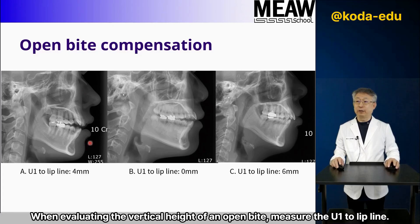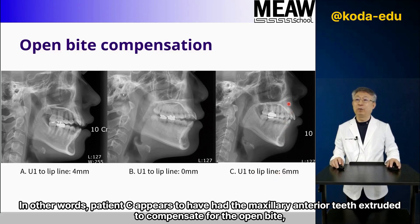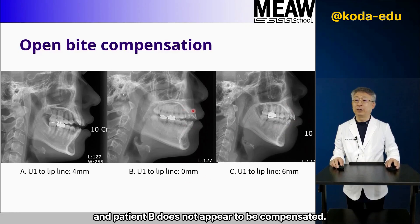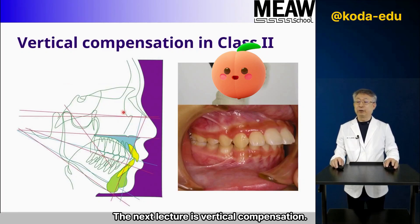When evaluating the vertical height of an open bite, measure the U1-to-lip line. Looking at three open bite patients, the U1-to-lip line of patient A is 4 mm, which is normal; patient B is 0 mm and patient C is 6 mm. Patient C appears to have had the maxillary anterior teeth extruded to compensate for the open bite, while patient B does not appear to be compensated. The same applies to deep bite, so measurement of the U1-to-lip line is essential.